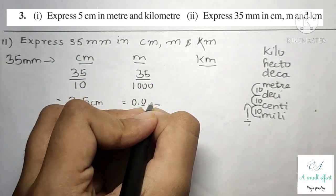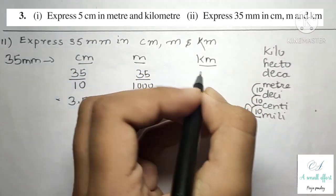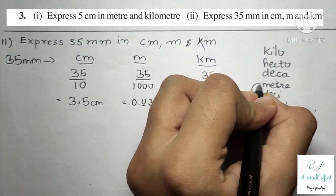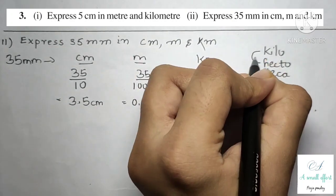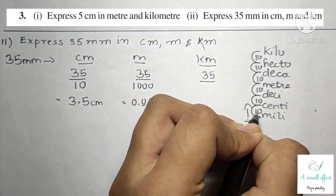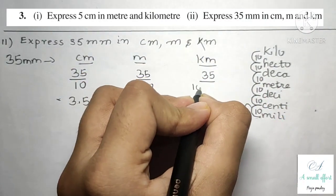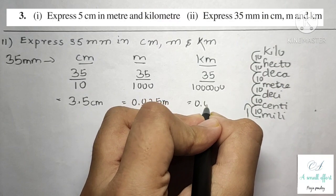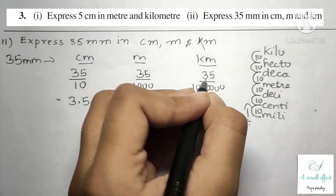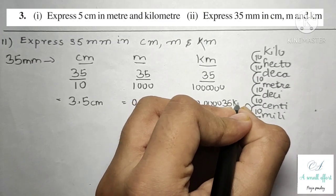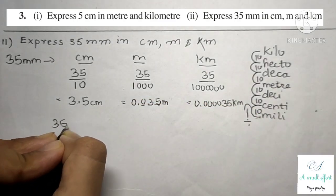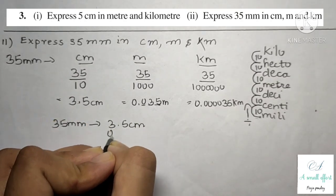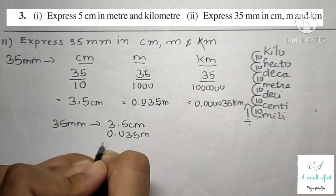For kilometer: from millimeter through centimeter, decimeter, meter, hectometer, to kilometer is six steps of 10, giving us one million. So 35 divided by 1000000 — that is 0.000035 kilometer. In summary: 35 millimeter equals 3.5 centimeter, 0.035 meter, and 0.000035 kilometer.